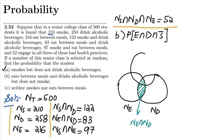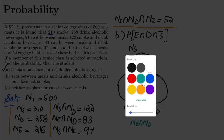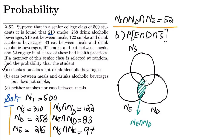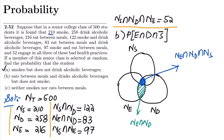Now, to include the students who smoke, I add a third circle for smoking. The common area in between all three circles represents the students who eat between meals, drink, and smoke — the triple intersection N(E ∩ D ∩ S).